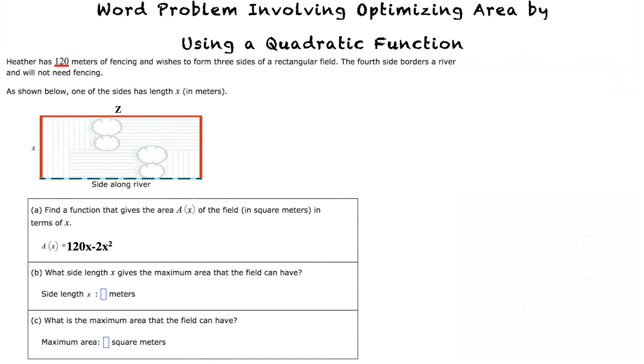Looking at the second part of the problem, we are asked to find the side length x that gives us the maximum area that this field can have. In order to do so, we will find the vertex of the quadratic function.